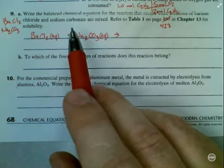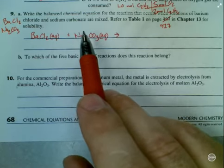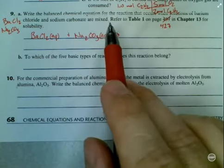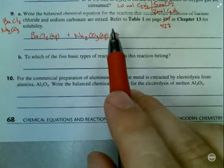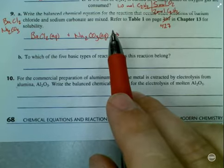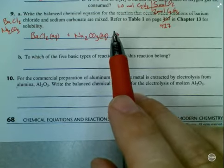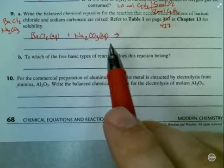Now, we're going to have a replacement reaction here. Barium is going to couple with the carbonate and the sodium is going to pair with the chloride. The only question here is, is one of these things going to form a solid and come out of solution, being a precipitant?